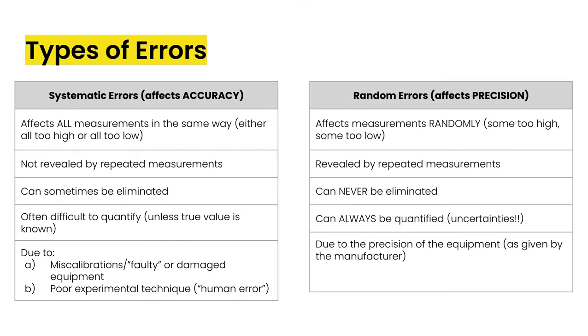The other type of errors that we see are random errors and these affect the precision of the experiment. So what it means by a random error is that measurements are affected randomly. Some are too high, some are too low. The nice thing about these is that they are revealed by repeated measurements. So you can do multiple trials and you will see this error in your measurements.